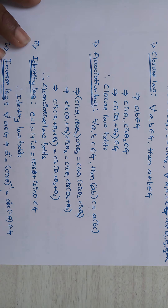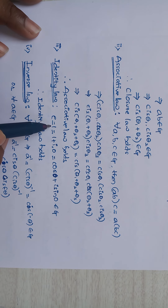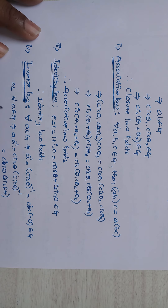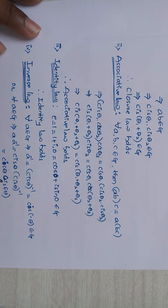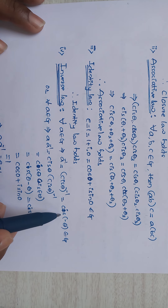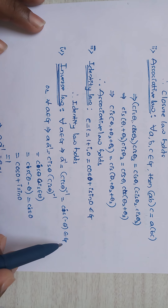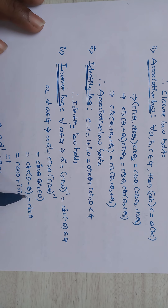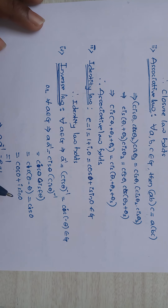Identity law: e = 1, which can be written as 1 + i·0 (i.e., cos 0 + i sin 0), and this belongs to G. Therefore identity law holds. Inverse law: for all a ∈ G, a⁻¹ = cis(−θ), which belongs to G. Then a · a⁻¹ = cis θ · cis(−θ) = cis(θ − θ) = cis 0 = cos 0 + i sin 0 = 1 = e. Therefore inverse law holds.